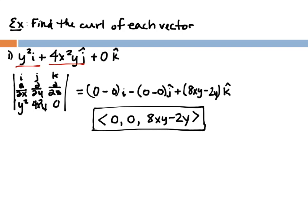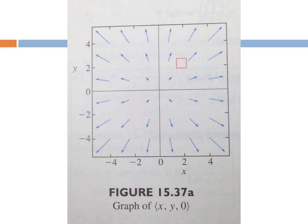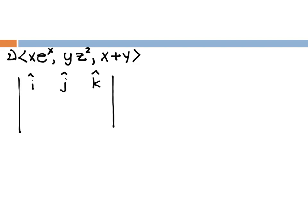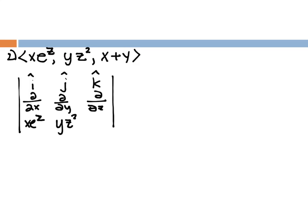Let's do one that actually has those terms in there. Problem 2: the vector field is ⟨xe^z, yz², x+y⟩. Setting up the determinant: î, ĵ, k̂; ∂/∂x, ∂/∂y, ∂/∂z; and xe^z, yz², x+y. Note: the exponent on e is z, not x — please change that.